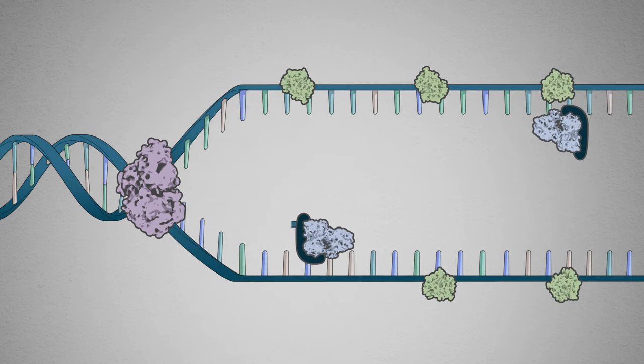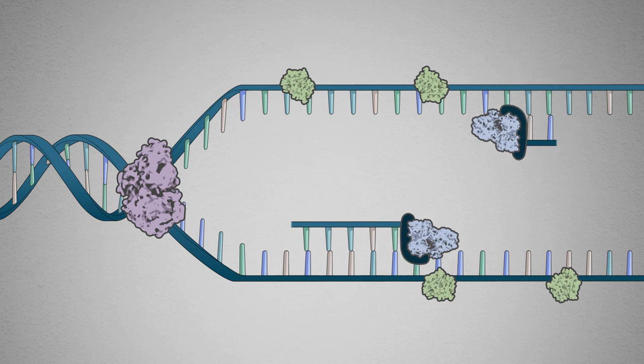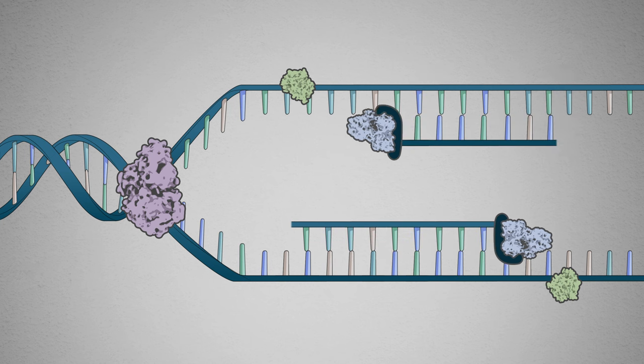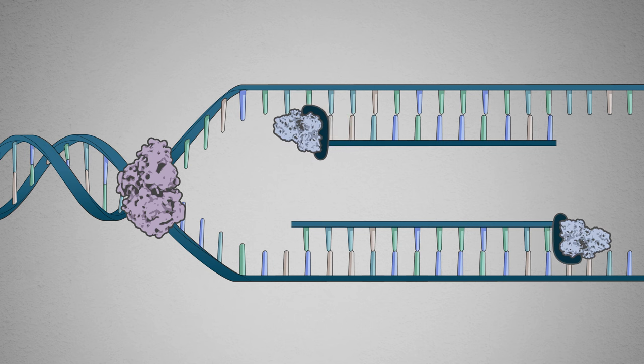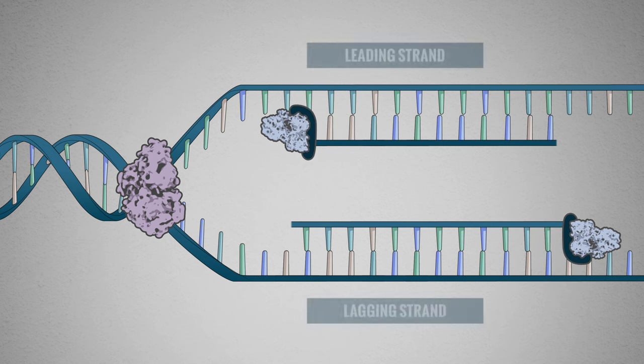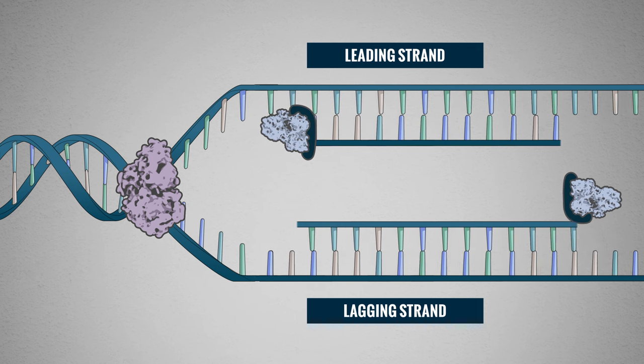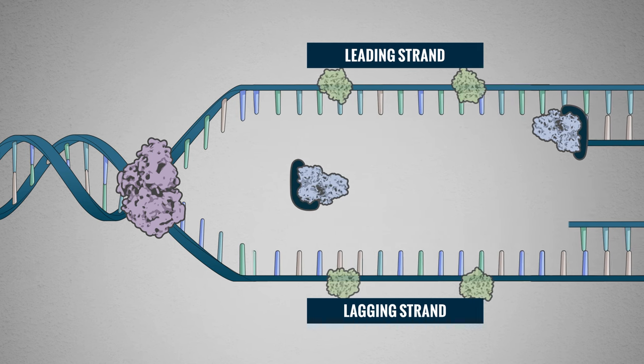Due to the opposing or anti-parallel nature of the DNA strands, the polymerase enzymes move in opposite directions. Because of its orientation, the leading strand is able to be replicated continuously by DNA polymerase III.